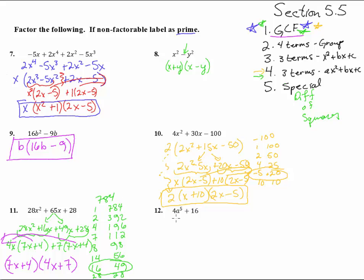Alrighty, last one. 4a to the 5th plus 16. This is a sum. This is not a perfect square, but it doesn't matter yet because we're going to go up here to the greatest common factor. And we can indeed pull out a 4. And we get a to the 5th plus 4. Not a perfect square. So we are done. There you go.